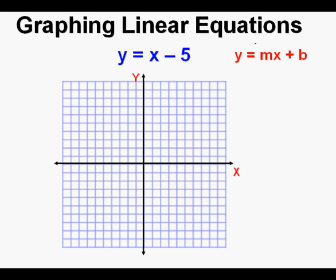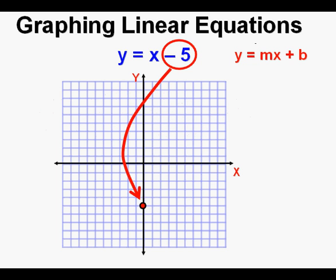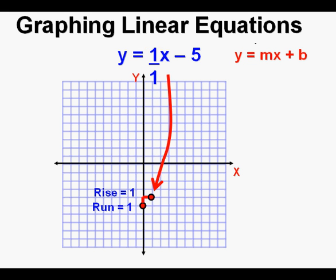Let's look at this last equation. Stop the video and graph the equation, then restart it to see if you worked it correctly. First, mark the y-intercept at negative 5. Since the x-term is just x, we use a slope of 1 over 1 — a rise of positive 1 and a run of positive 1. We mark the second point, giving us two points to draw the line.